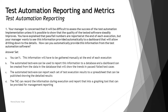The first question: your manager is concerned that it will be difficult to assess the success of the test automation implementation unless it is possible to show that the quality of the test software steadily improves. You have explained that pass or fail numbers are reported at the end of each execution, but your manager wants to see this information provided automatically to a dashboard that will allow drilling down to the details. How can you automatically provide this information from the test automation software?